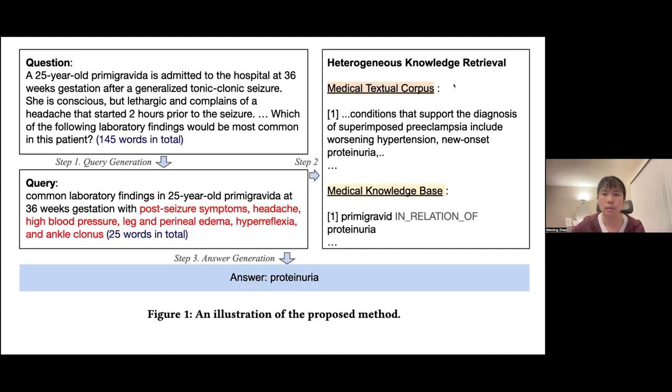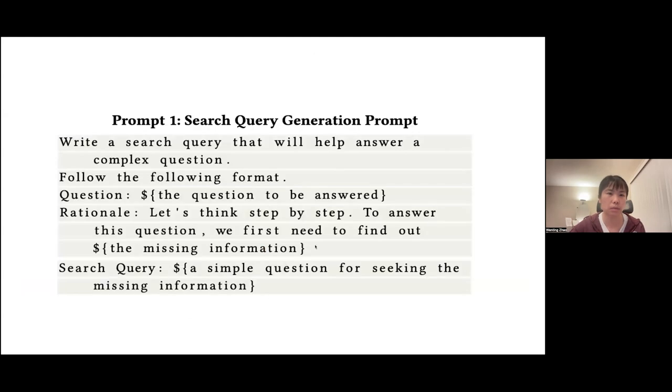After retrieval from the textual corpus and structured knowledge base, the next step is to generate the short answer. So we prompt a large language model again by providing the original question and the retrieved corpus. We prompt the language model to generate the short answer. And we also show the prompts we send to the large language model to generate a search query and the final answer in the next two slides.